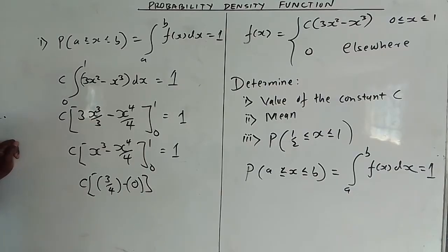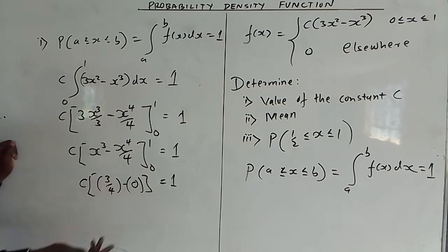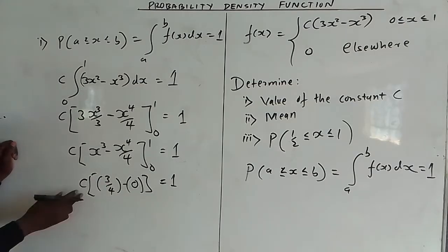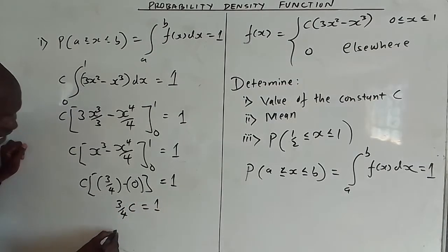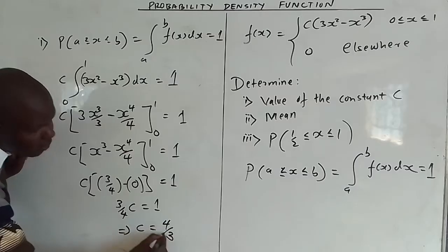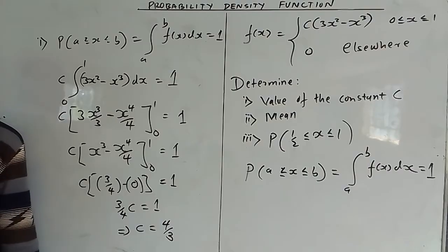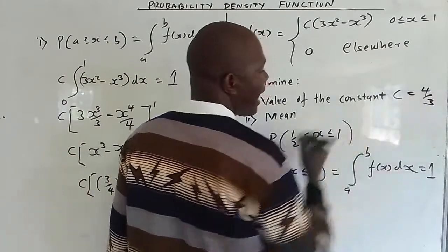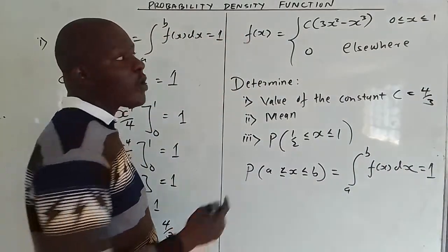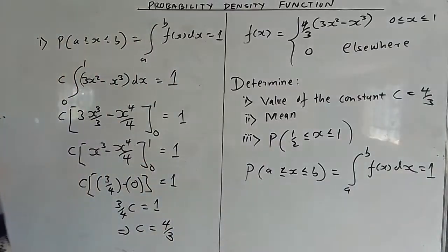So the expression becomes c times (3/4 - 0) = 1, giving us (3/4)c = 1. Multiplying both sides by 4/3, we find c = 4/3. This means wherever c appears in subsequent calculations, we substitute 4/3.